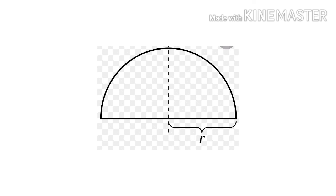The diameter of a circle divides it into two equal parts. Each part is called a semicircle. So when the diameter divides the circle into two equal parts, each part is known as a semicircle.